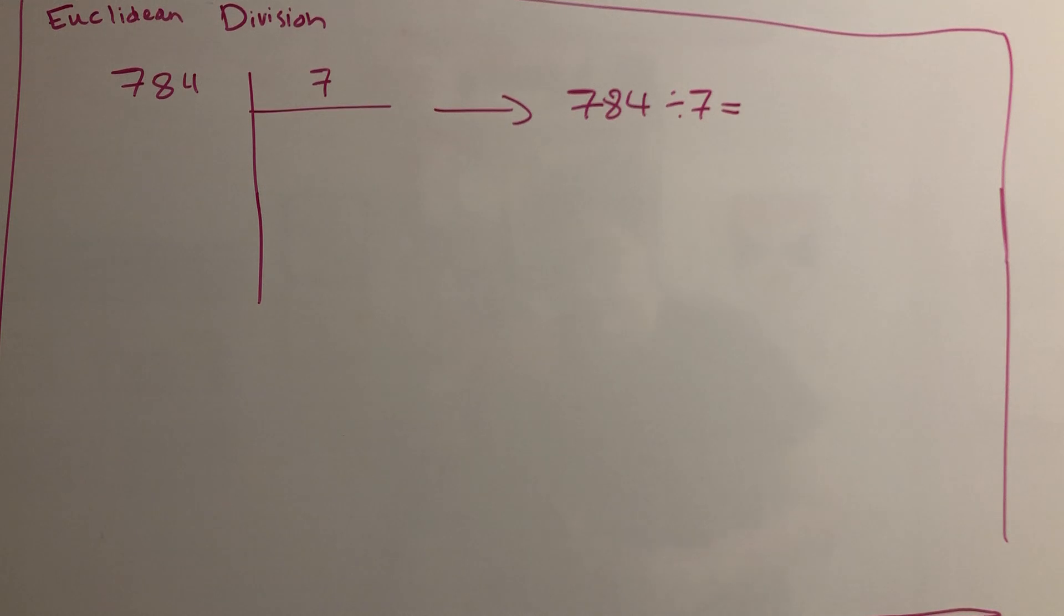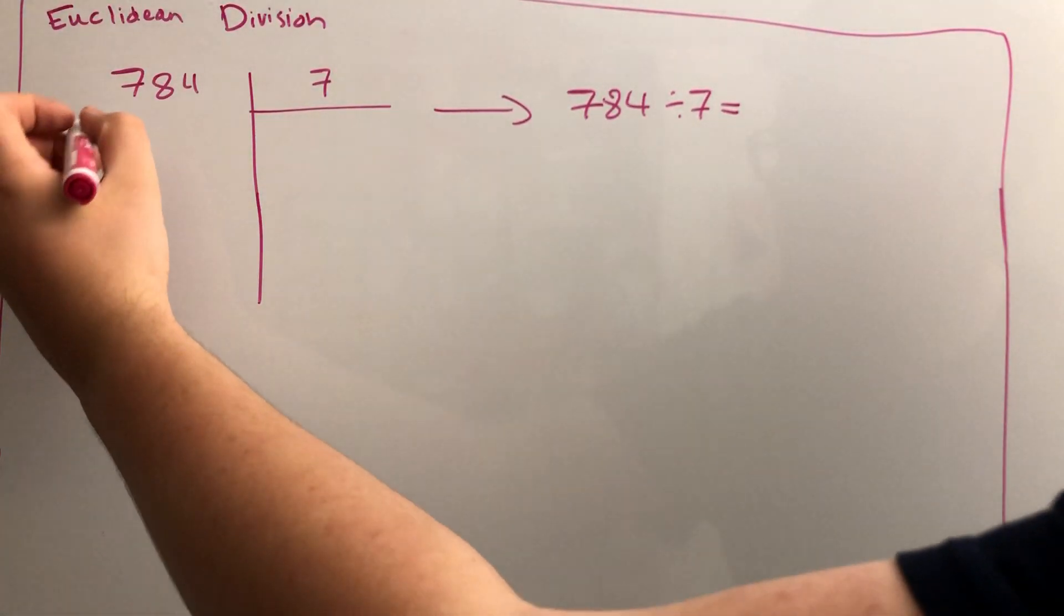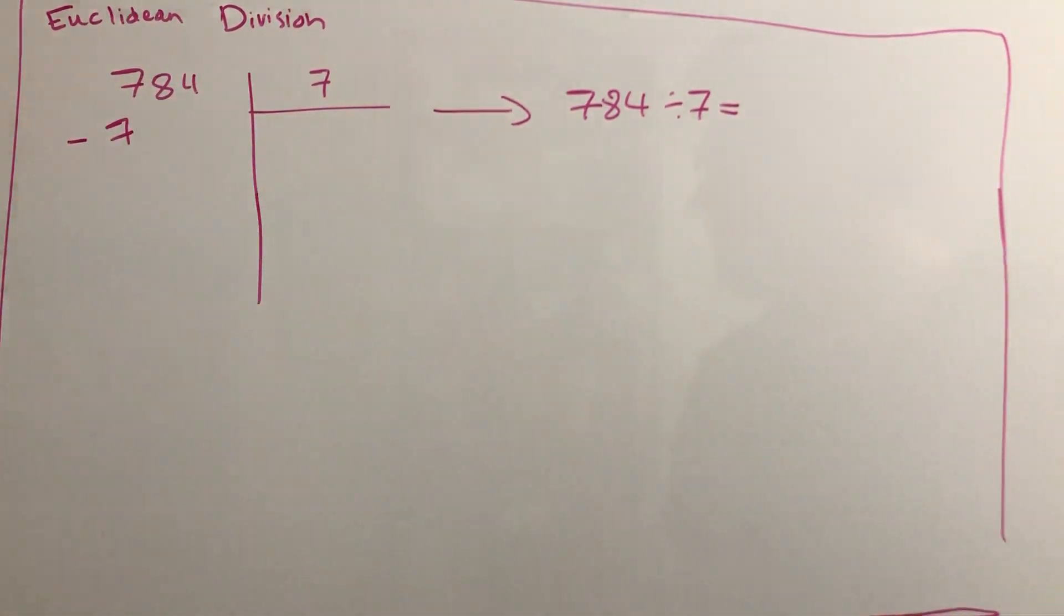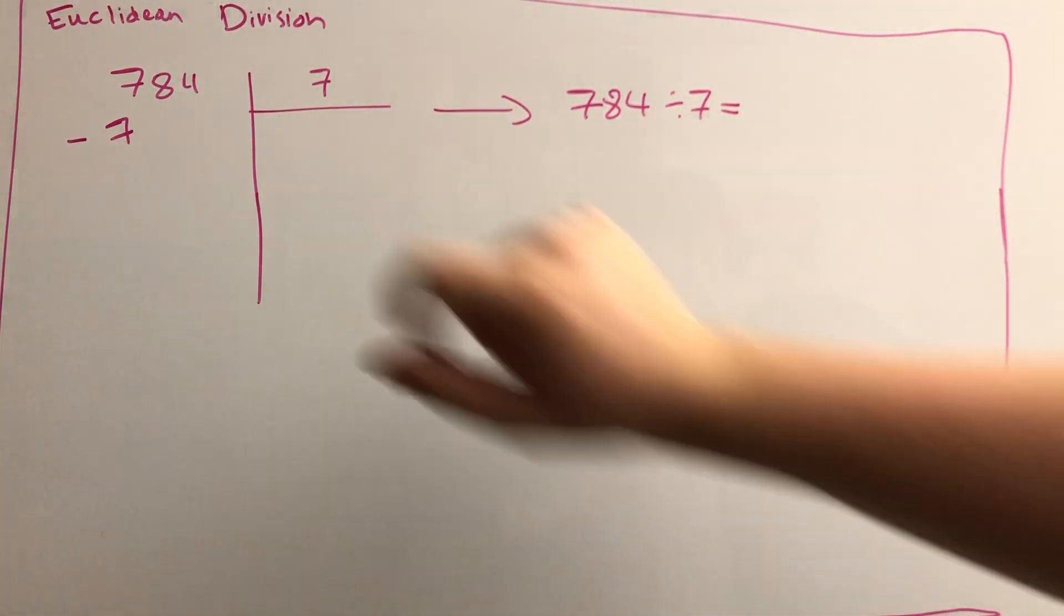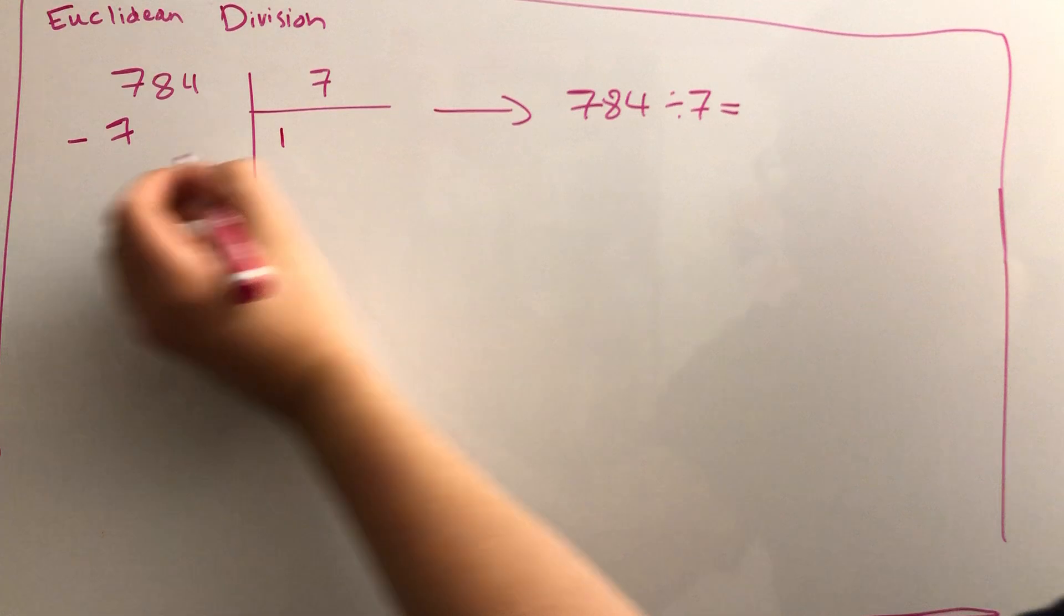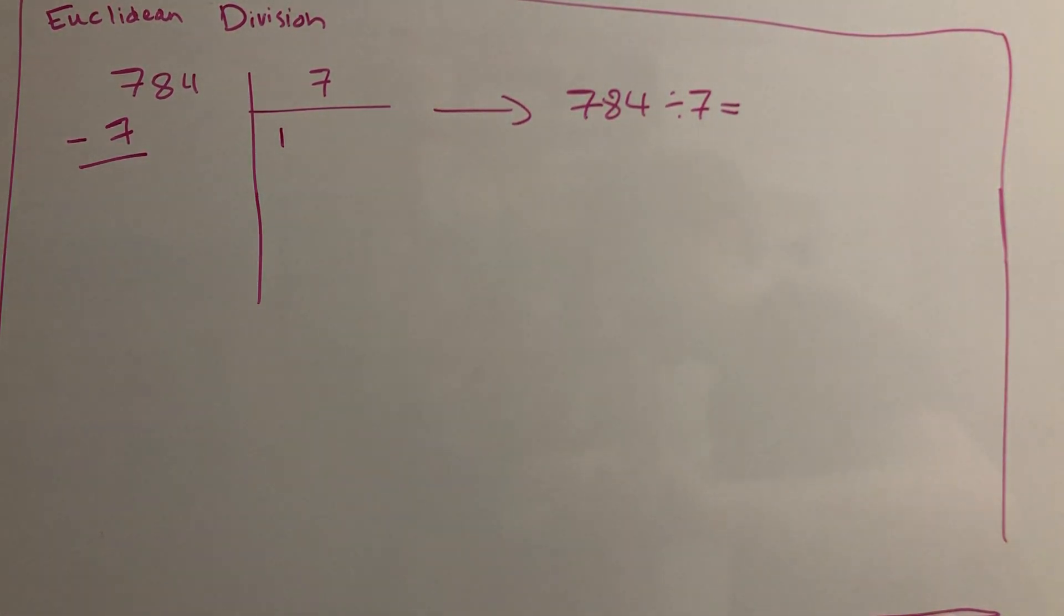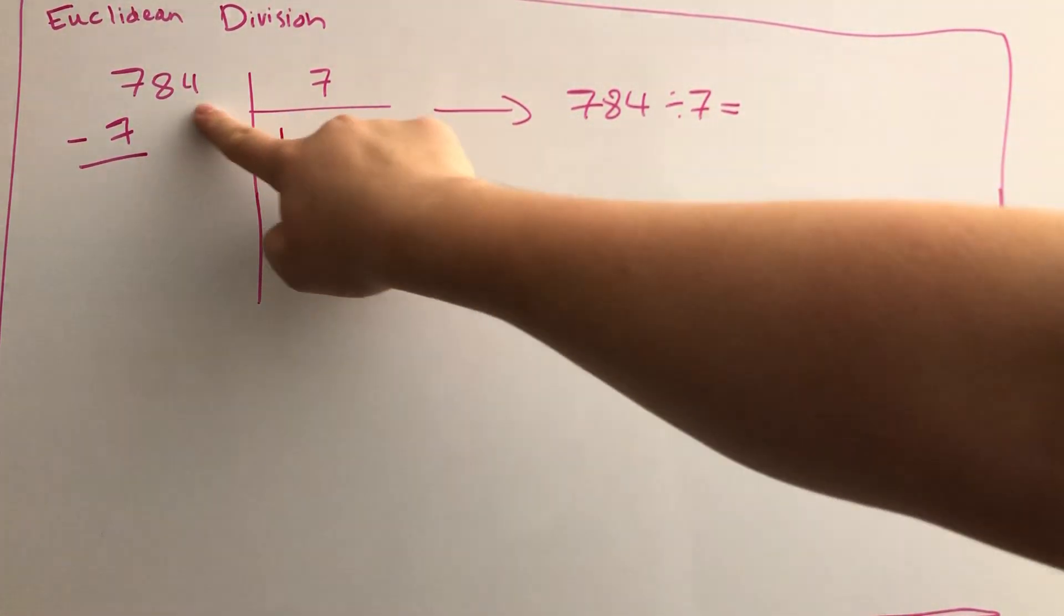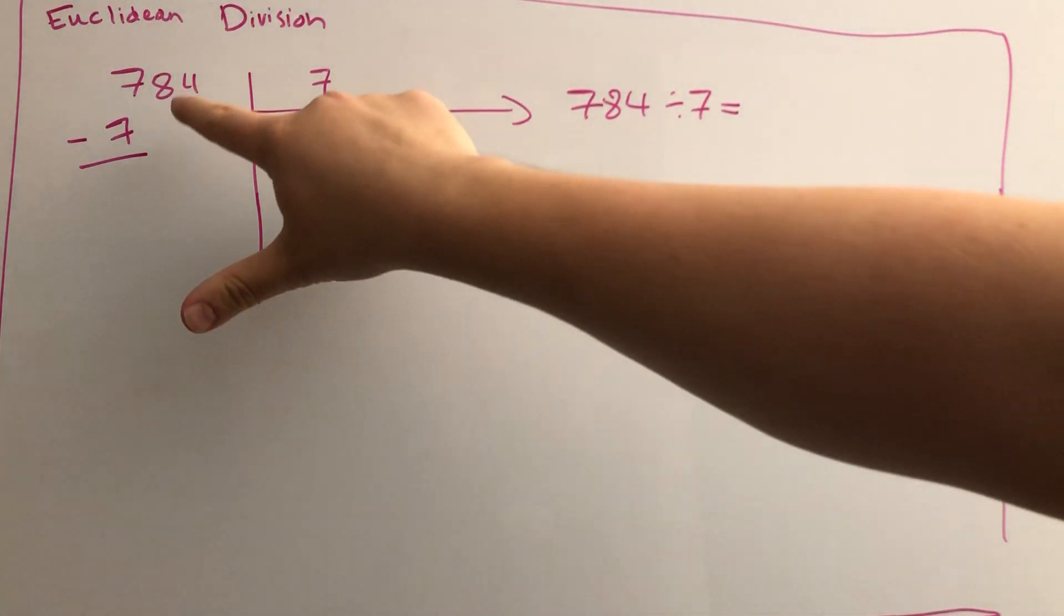How we do Euclidean division is from left to right, so you look at each individual digit. How many times does 7 go into 7? Well, it goes into 7 once because it's itself. You write down the 1 here and then ignore the 84 and do the subtraction: 7 minus 7, and you get 0.